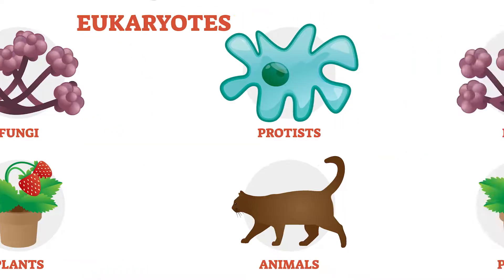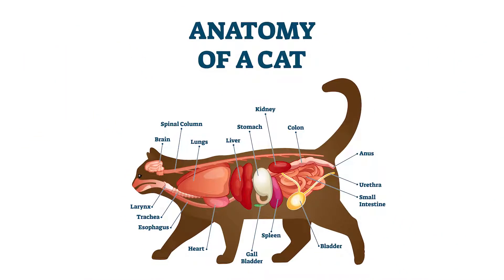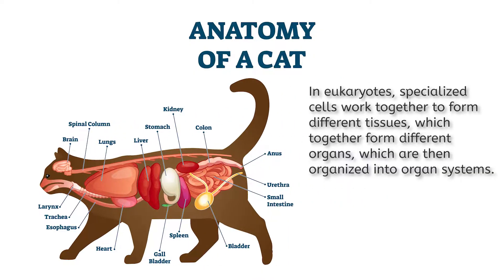Within each of these organisms, all of the cells have to work together as a cohesive system. In us humans, this cat, and in many other organisms, specialized cells work together to form different tissues, which together form different organs, which are then organized into organ systems. For example, this cat's brain and spinal cord are each made of tons of cells and work together to form our central nervous system.